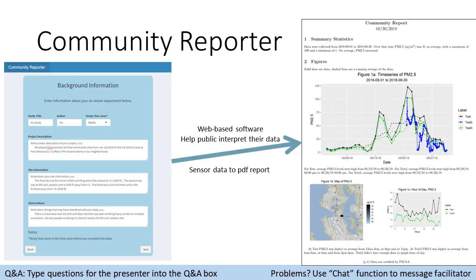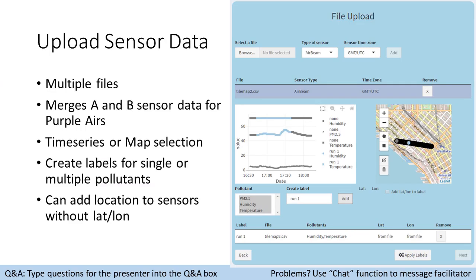Then we have the community reporter, a tool used in conjunction with our sensor lending program. It supports the sensors we lend out — the public can take those sensors, record information, and upload it to the community reporter, which crunches the numbers and gives them back a PDF output with graphs of what those sensors recorded. To upload the data you select one or multiple files and then select the chunk of data you're interested in — a process called labeling. You can select on a map or on a time series to tag the information you're interested in, so you can compare one area to another or one point in time to another.